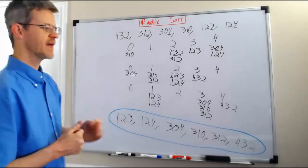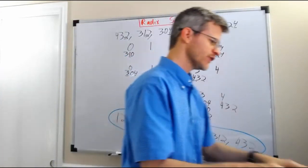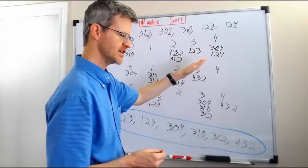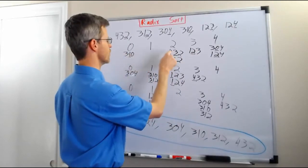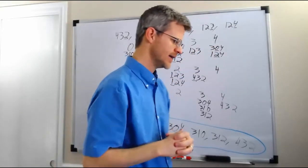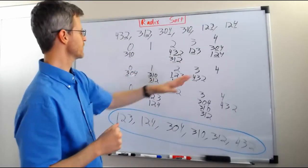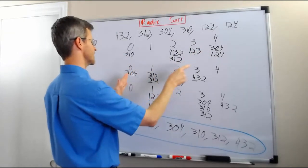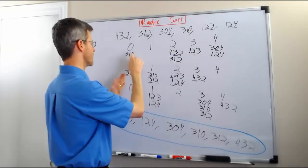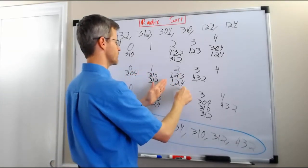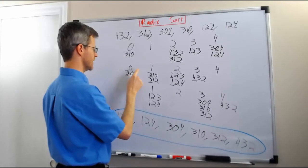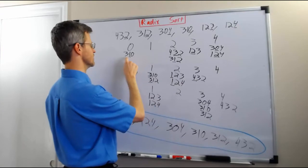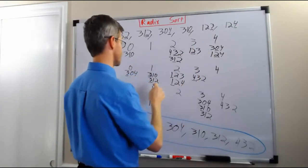Let me explain the intuition behind this. To get a proper sort, we first put numbers in bins by the last digit, which gave us something sorted by the last digit: 0, 2, 3, 4. Then we took those numbers and put them in bins by the second digit, maintaining the existing ordering when the second digit is the same. So: 304, 310, 312, 123, 124, 432 — these are sorted by the second digit.